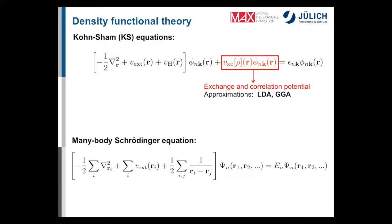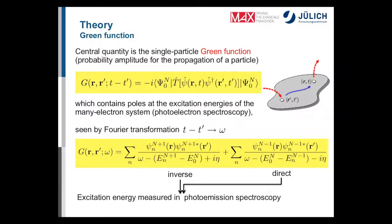In principle, to calculate excitation energies we would solve the many-body Schrödinger equation. With the GW approach we compute approximate eigenvalues of the many-body Schrödinger equation. The basic quantity in many-body perturbation theory is not the density, as in DFT, but something more complex — a generalized density — called the single-particle Green function, which depends on two points in space r and r′ and also on time.